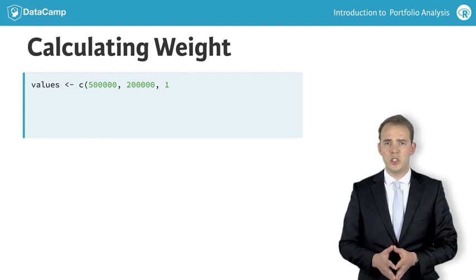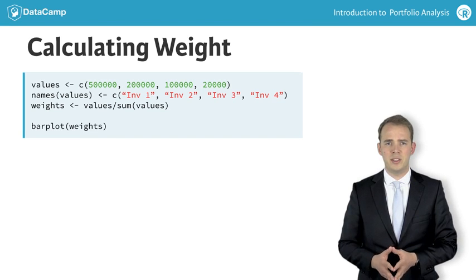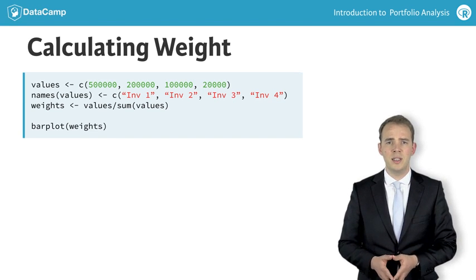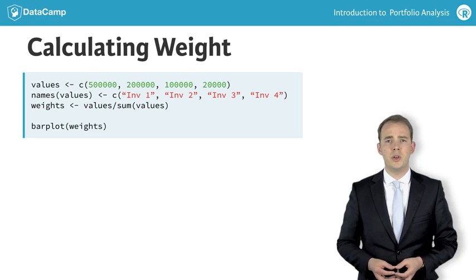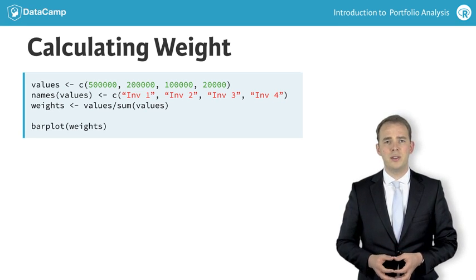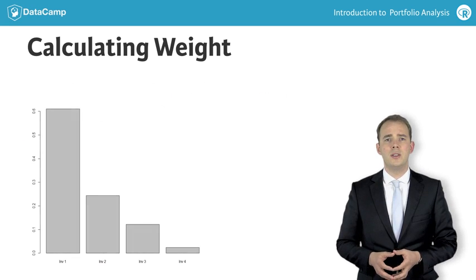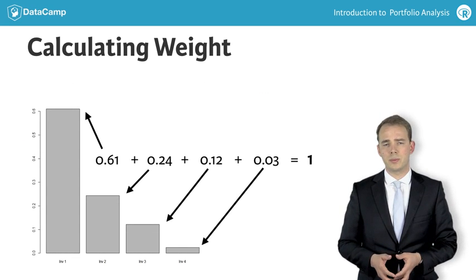The corresponding R code is simple. Suppose that values is a vector holding the values invested in the different assets. Then the corresponding weight vector is simply that vector of values divided by its sum. Of course this vector sums to unity.